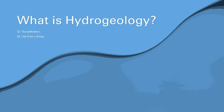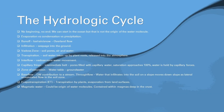The hydrologic cycle technically has no beginning and no end, but we typically start explaining it with evaporation off the ocean — though that is not the origin of the water molecule. Evaporation is liquid water turning to gas; condensation is gas turning back into a liquid in the atmosphere; and precipitation is that liquid becoming so heavy it falls to the surface as rain or snow. Runoff results from precipitation — whether ice, rain, or snow — and is also called overland flow.